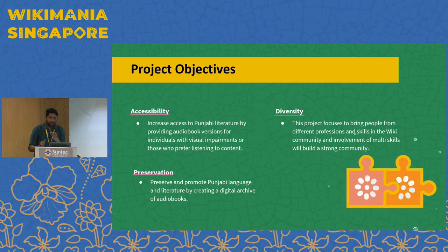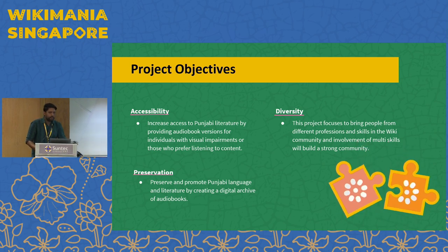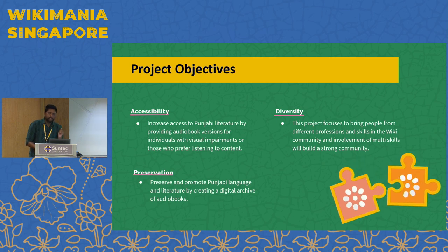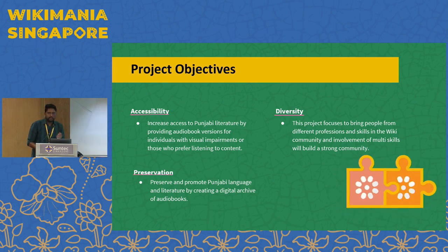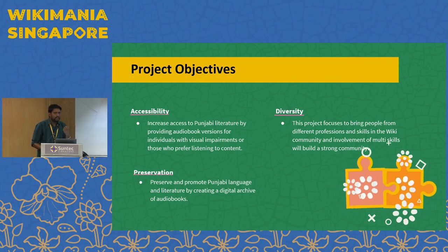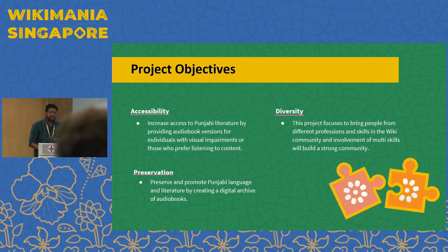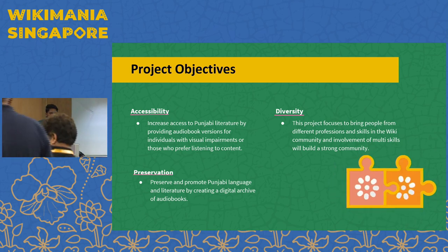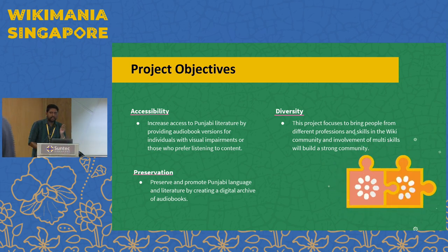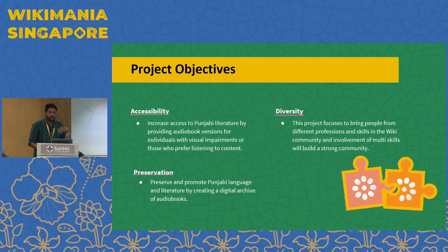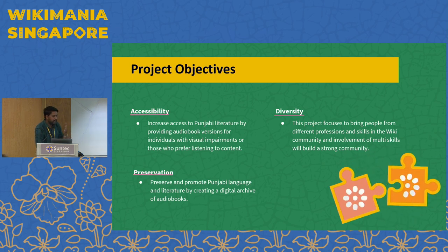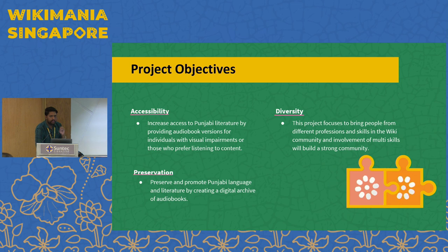First of all, I want to share the project objectives. The first is accessibility — we want to increase access to Punjabi literature. Most people don't want to read, but listening is easy because they can listen while working out or doing any other work. Reading takes time and becomes a separate activity, but with audiobooks, our literature can reach more people. The second objective is preservation, because we are creating digital content in the form of audiobooks.